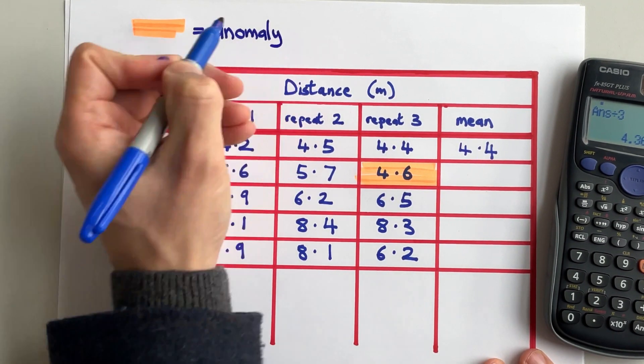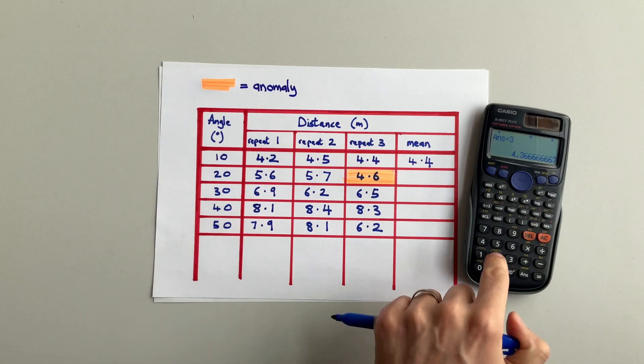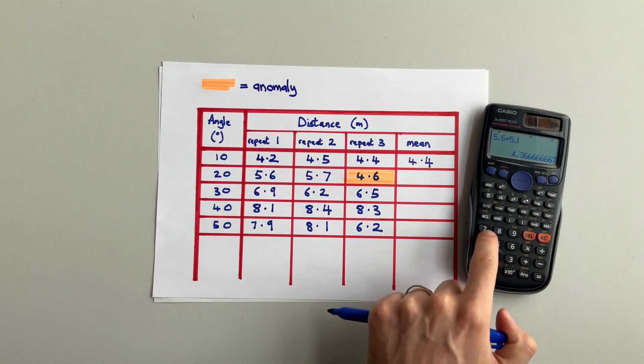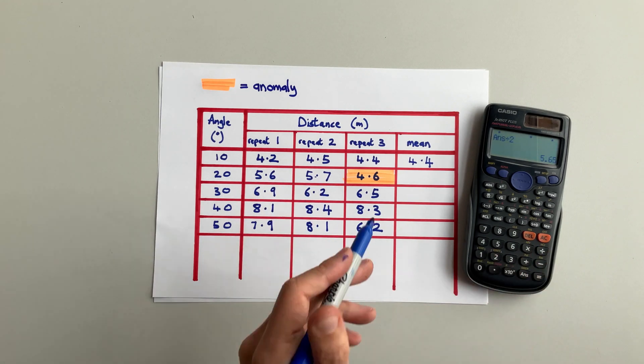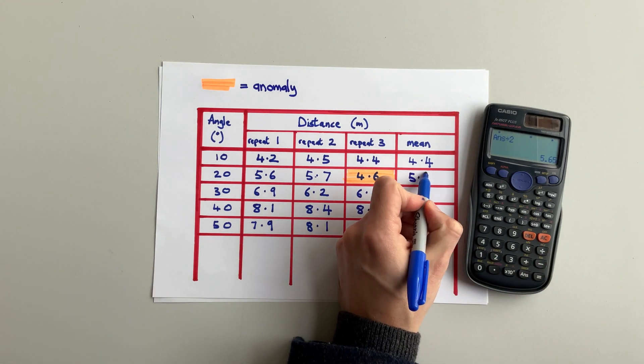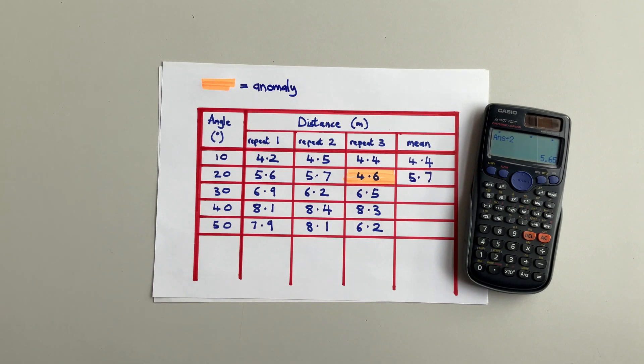So our calculation is going to be 5.6 plus 5.7. Push equals and then divide by two because we only added two numbers together. And that gives us an average of 5.65 or 5.7 when we round up.